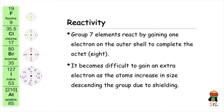The fourth trend is reactivity. Group 7 elements react by gaining or accepting one electron onto its outer shell to complete the octet — that is, having eight electrons on the last shell. As we descend the group, the atomic radius increases and so does shielding. Shielding reduces the effect of the nuclear pull on the outer shell electrons. Therefore, as the atomic radius increases, it becomes more difficult for the nucleus to attract its own outer shell electrons, and furthermore, an additional electron from a neighboring atom.